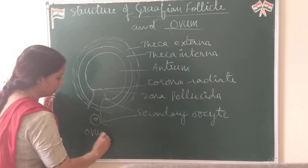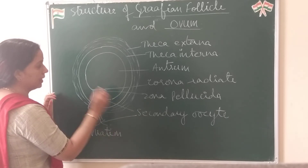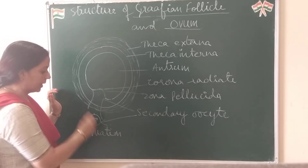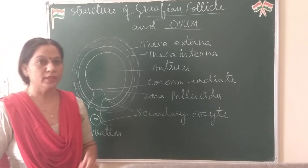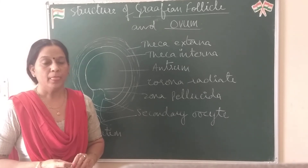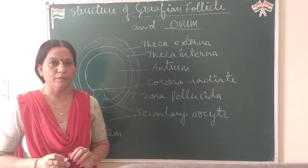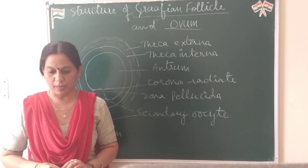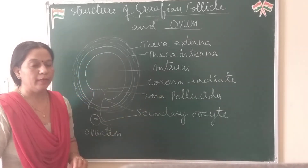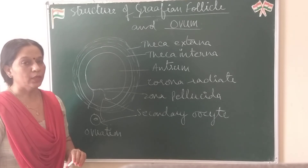At the time of ovulation, secondary oocyte is released from the Graafian follicle. This secondary oocyte undergoes the complete second meiotic division just before fertilization at the time of entry of sperm into the ovum, and it forms the second polar body which degenerates, and the ovum.